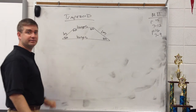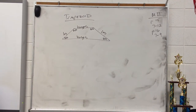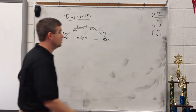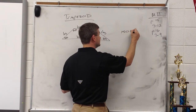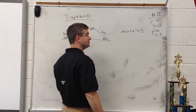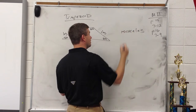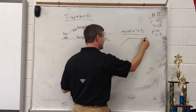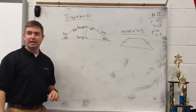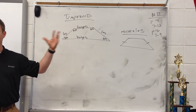The non-parallel sides of a trapezoid are the legs of the trapezoid. If the legs of a trapezoid are congruent, then the trapezoid is an isosceles trapezoid. Isosceles trapezoids only exist when the legs are congruent.